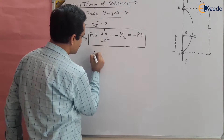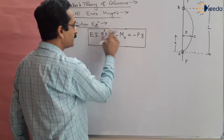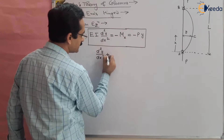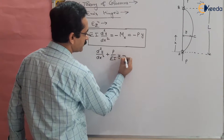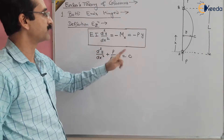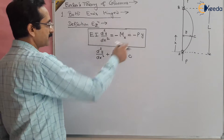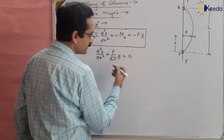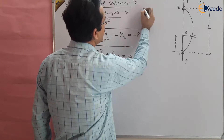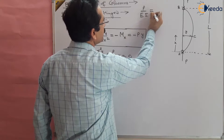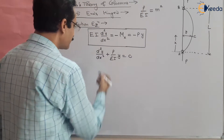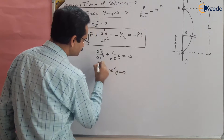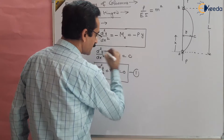We can arrange this equation using the double differential equation form. Rearranging: d²y/dx² + (P/EI)·y = 0. We take Py to the left-hand side and divide both sides by EI to get this equation. We can further simplify by letting m² = P/EI, giving us: d²y/dx² + m²y = 0. This is the deflection equation in differential form.